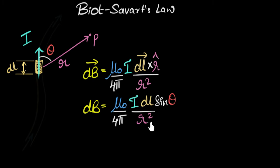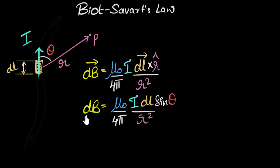The field is inversely proportional to r squared, meaning if you go farther away, the magnetic field drops off as 1/r². That's very familiar — we've seen this in Newton's law of gravity, in Coulomb's law, and now also in Biot-Savart law. Just like Coulomb's law only works for point charges, Biot-Savart only works for point current elements, so we can only consider very tiny pieces of wire.